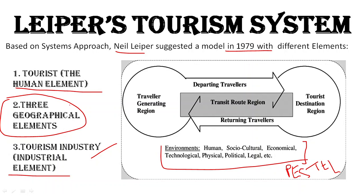Leiper defined tourism as a system where different elements are interdependent and interrelated. There are five elements: the human element — the tourist; the industrial element — the tourism industry; and three geographical elements — TGR (Traveler Generating Region), TDR (Tourist Destination Region), and TRR (Transit Route Region). If asked how many elements in Leiper's system, the answer is five, with three being geographical.